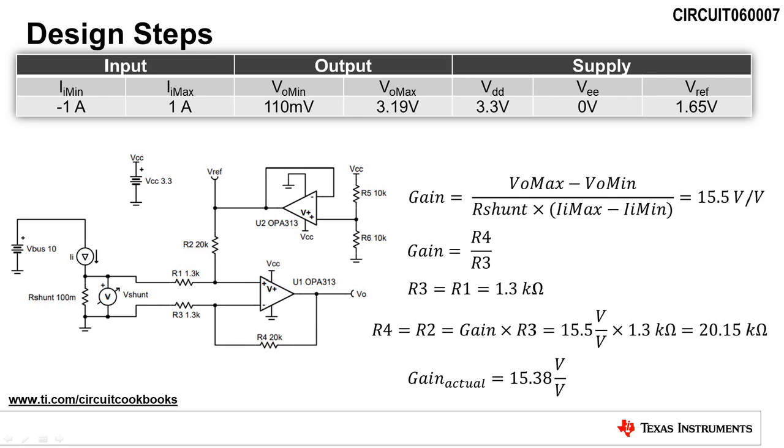Since 20.15 kilohms is not a standard resistor value, we will use the next closest standard resistor value of 20 kilohms. Given a standard value of 20 kilohms for R4 and 1.3 kilohms for R3, the actual gain of the circuit is 15.38 volts per volt.